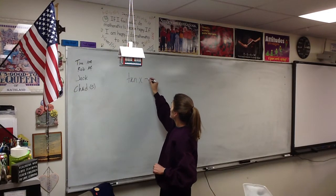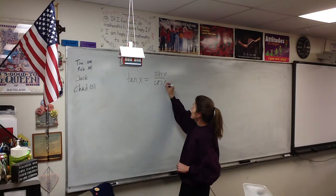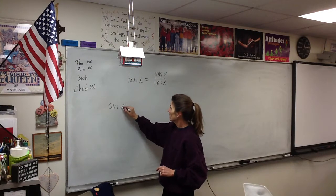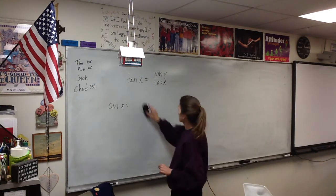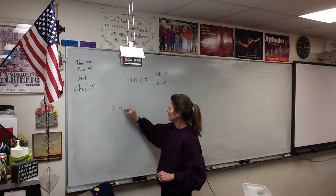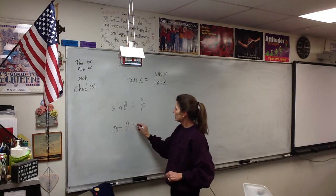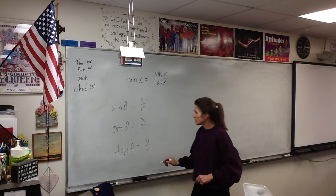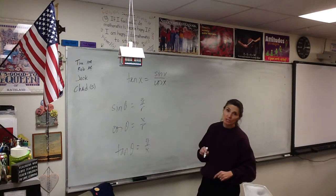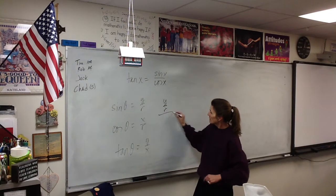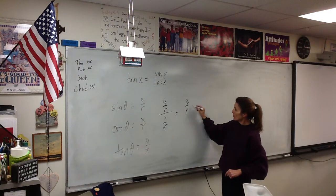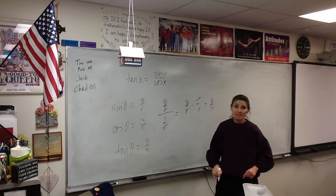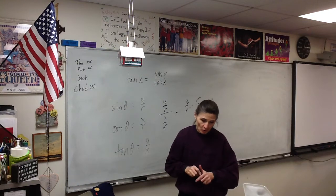The tangent can be written as sine over cosine. That should make sense to you if you stop and think that sine is y over r and cosine is x over r. You already know that tangent is y over x. So if you put y over r over x over r, that's y over r times r over x. So it makes sense that tangent could be written as sine over cosine, and likewise cotangent as cosine over sine.